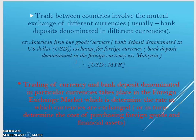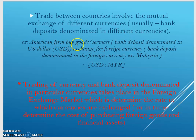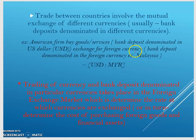Trade between countries involves the mutual exchange of different currencies — usually bank deposits denominated in different currencies. For example, American firms buy goods or services, which involves bank deposits denominated in USD, exchanged for foreign currency bank deposits denominated in foreign currency.